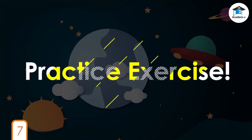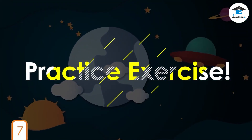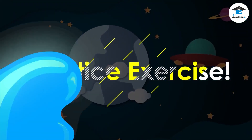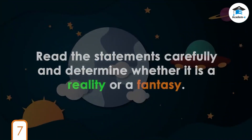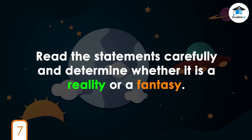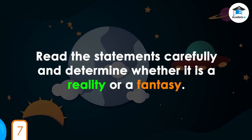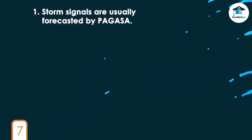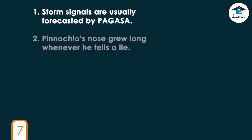Let's put into practice what we have learned. Read the statements carefully and determine whether it is a reality or a fantasy. Number 1: Storm signals are usually forecasted by PAGASA.